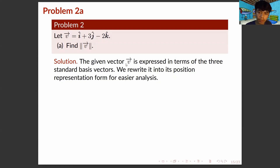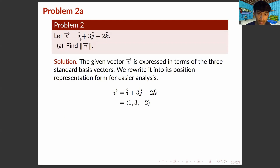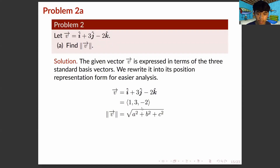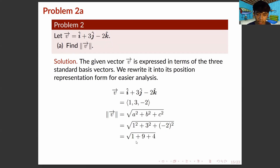For part A, the given vector V is expressed in terms of the three standard basis vectors. We rewrite it in position representation form, removing i-hat, j-hat, and k-hat, giving us (1, 3, −2). To find the norm, we compute the square root of 1 squared plus 3 squared plus (−2) squared, which gives the square root of 14.